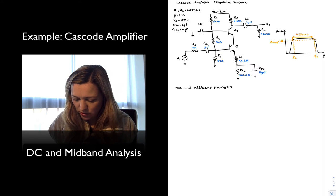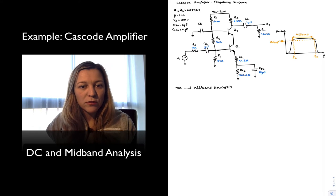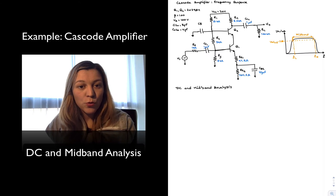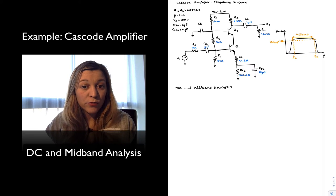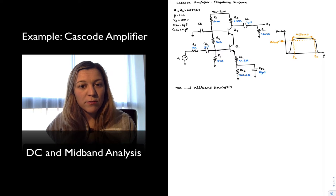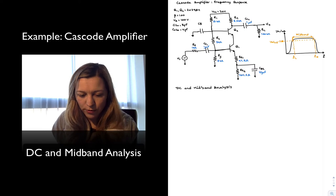I need to be a little bit more careful when I label my voltages. I can't talk about VB and VE generically, but rather I need to indicate what I'm talking about — VB of transistor Q1 or of transistor Q2. So I'm going to label things as VB1 for the base voltage of transistor 1, VB2 for the base voltage of transistor 2, and so forth.